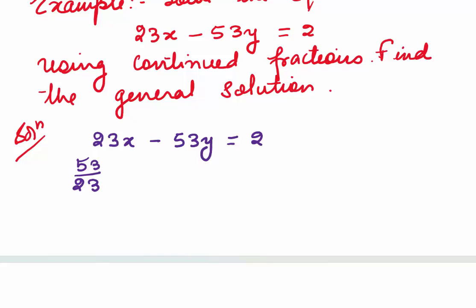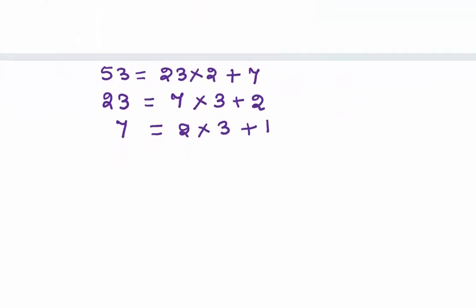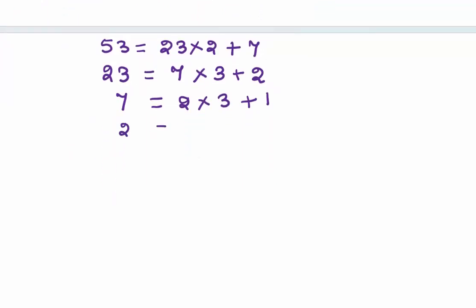First thing we will do is start with our continued fraction. Pick up the bigger number 53 divided by the smaller number and form the continued fraction. We will write the continued fraction using Euclidean algorithm. 53 = 23·2 + 7. Now, divide 23 by 7. You will get 7·3, the quotient is 3, remainder will be 2.